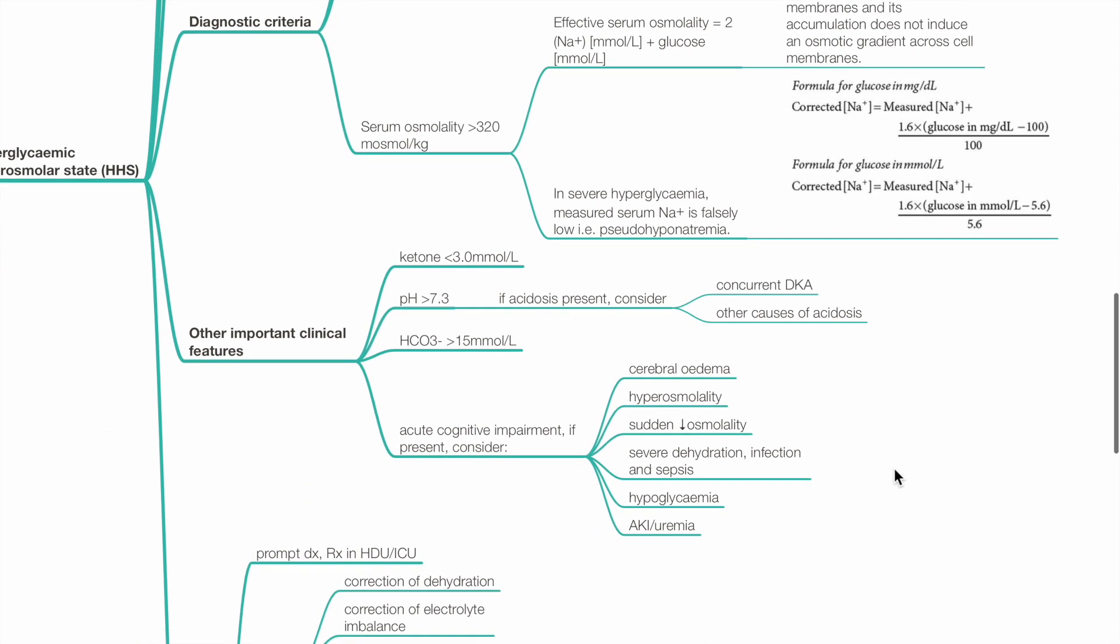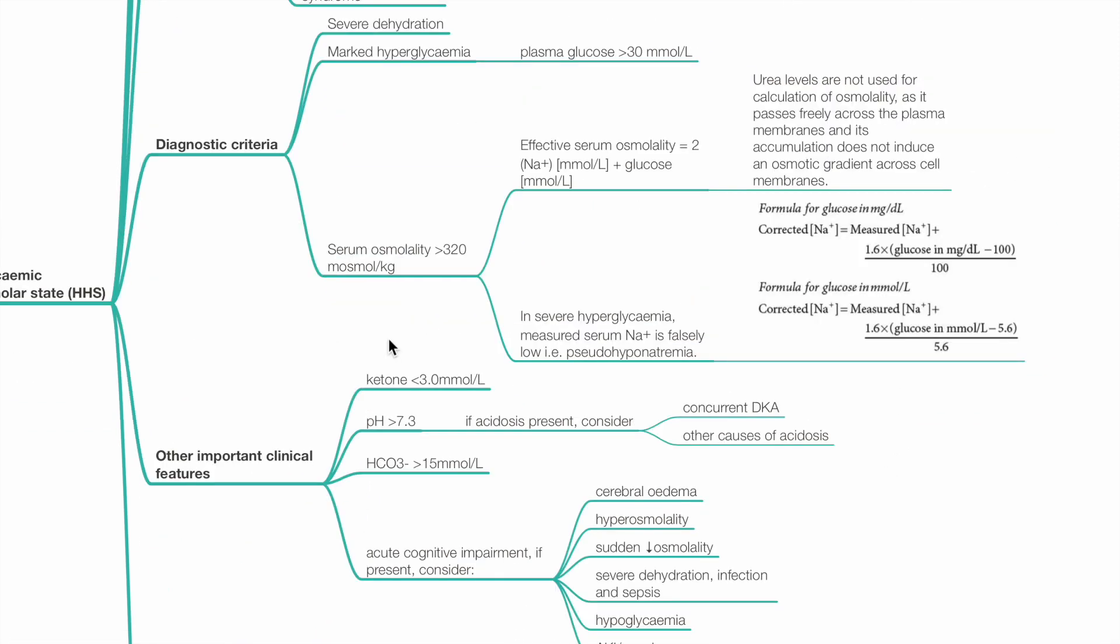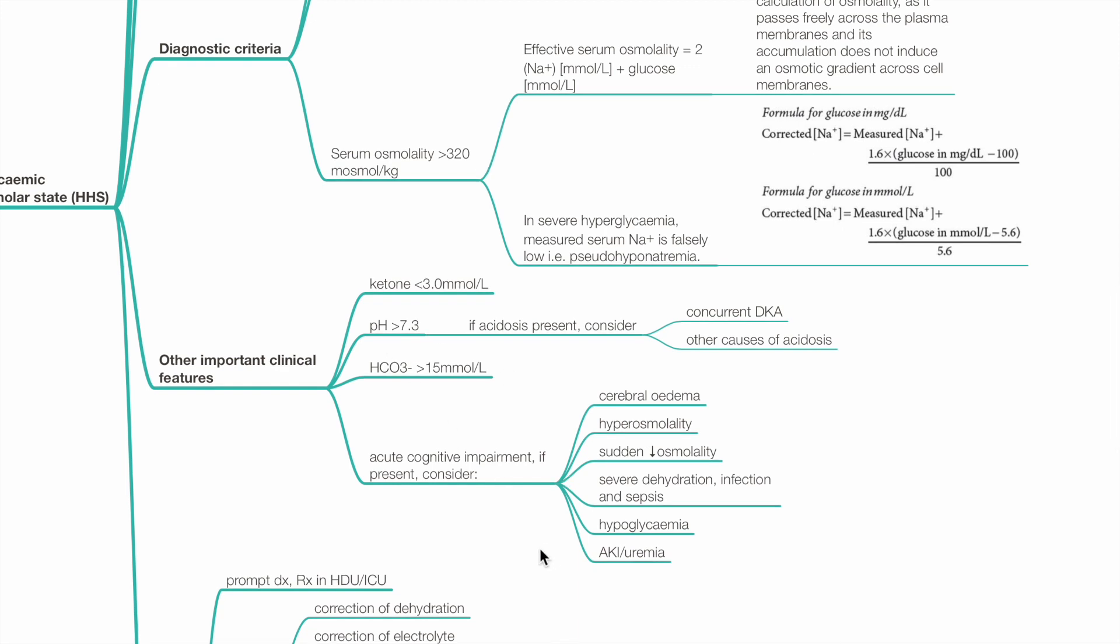Other important clinical features: serum ketones less than 3 mmol per liter, pH more than 7.3. If acidosis is present, consider concurrent DKA or other causes of acidosis. Venous bicarbonate more than 15 mmol per liter. Acute cognitive impairment. If present, consider cerebral edema, hyperosmolality, sudden fall in osmolality, severe dehydration, infection and sepsis, hypoglycemia, AKI and uremia.